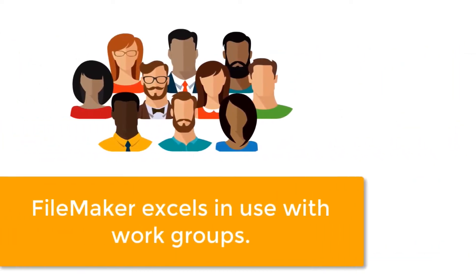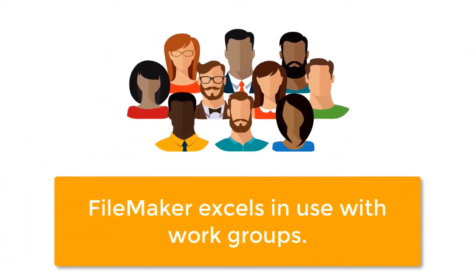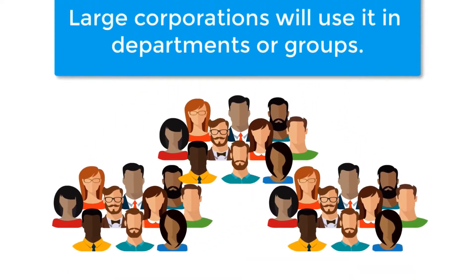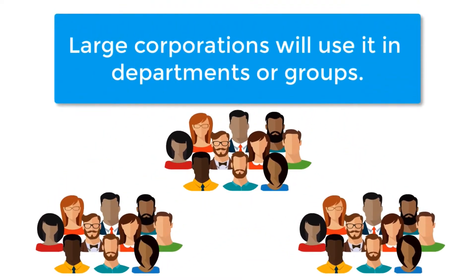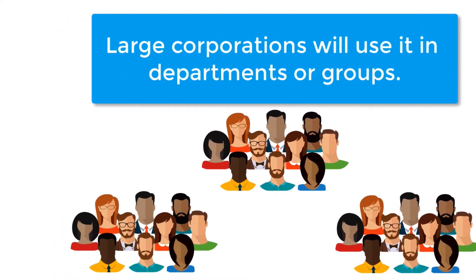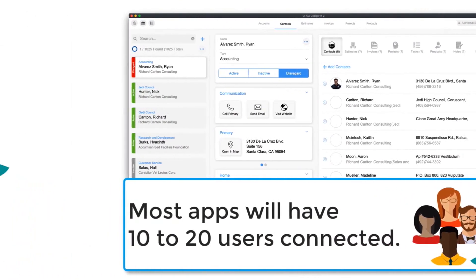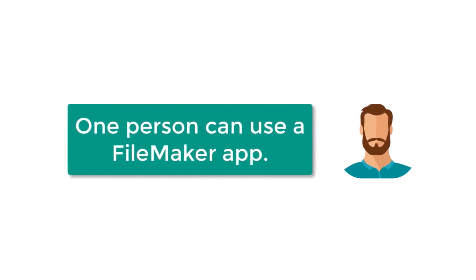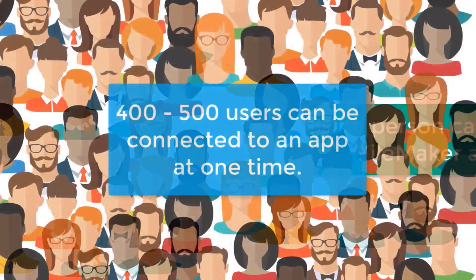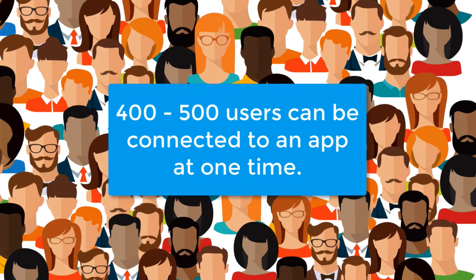FileMaker's sweet spot, where it really excels, is with work groups. Most organizations, even giant corporations, have different departments or groups ranging from 2 to 3 individuals to maybe 50, 70, or even 100 staff. Most FileMaker custom apps have 10 to 20 users connected at any given time, though a single individual can use FileMaker themselves. A FileMaker custom app can also have more than 400 or 500 users connected at a single time, giving FileMaker a broad range of scalability.